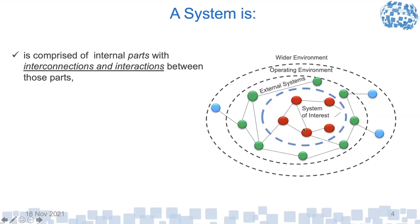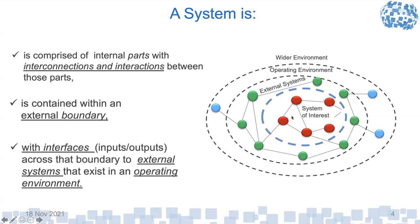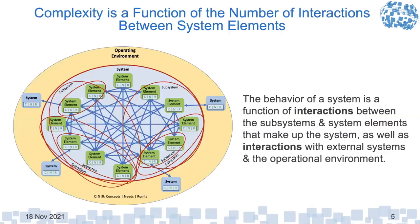The basic system definition is that you have internal parts with interactions and connections between those parts — the internal interfaces — and then a boundary that surrounds your system of interest. You have interactions, interfaces, inputs and outputs across that boundary with external systems, which themselves interact with even more external systems. You also have the operating environment and a wider environment. When you get into a real system, you can see how many interactions there are — it can be quite mind-boggling to keep track of all those interactions.